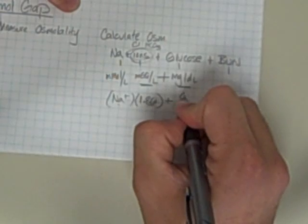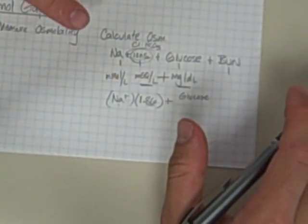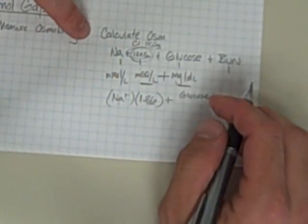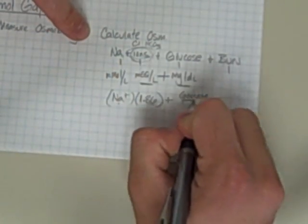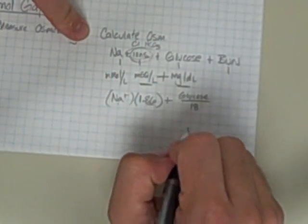plus the glucose. And we could go through the milligrams per deciliter into grams per liter into molarity. Doing all of that work, which is in the presentation, you'll see that really what we can just do is divide my glucose value by 18.